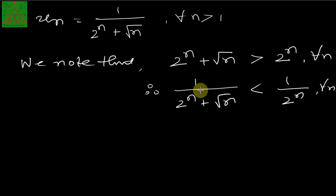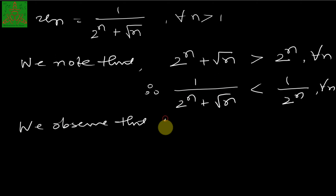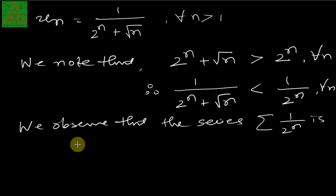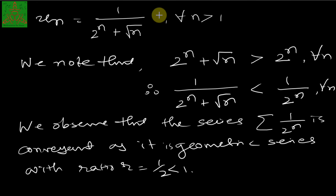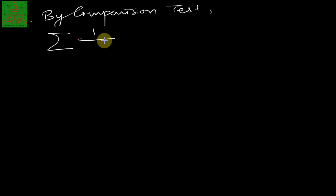By the comparison test, since v_n bounds u_n from above, if summation of v_n is convergent then summation of u_n is convergent. The series summation of 1/2^n is a geometric series with ratio r = 1/2, which satisfies |r| < 1, so it is convergent. Therefore by the comparison test, the summation of 1/(2^n + √n) is convergent.